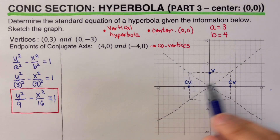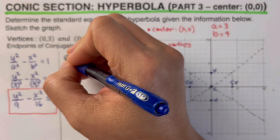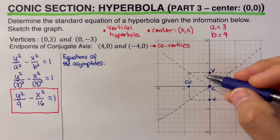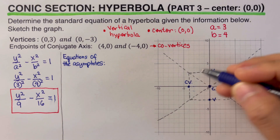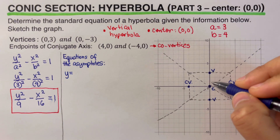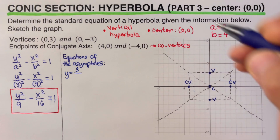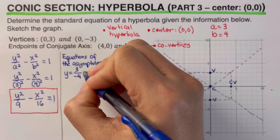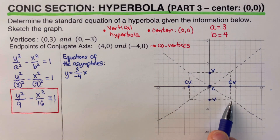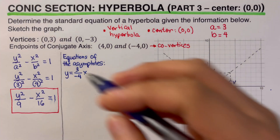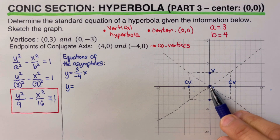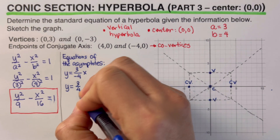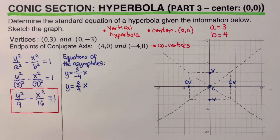Now let's determine the equations of the two asymptotes. For the asymptote with a negative slope: we go up 3 and over 4 to the left, giving y = −(3/4)x. For the other asymptote with a positive slope: we go up 3 and over 4 to the right, giving y = (3/4)x. These are the equations of the two asymptotes.